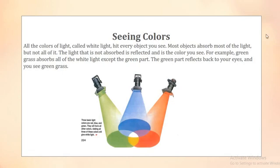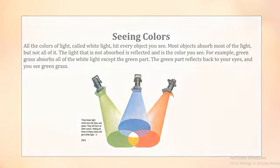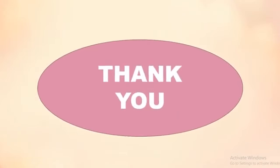This object is light pink, so it absorbs all the white colors except light pink, which reflects back - that's why we can see that color. A white object reflects all the colors, which is why we see it as white. The black object absorbs all the colors - when something absorbs all the colors, we see just black. I hope you enjoyed my lecture. Thank you for listening, see you next time.